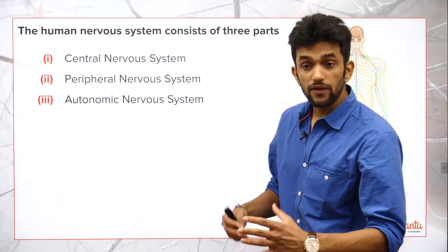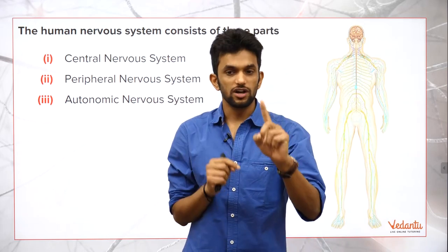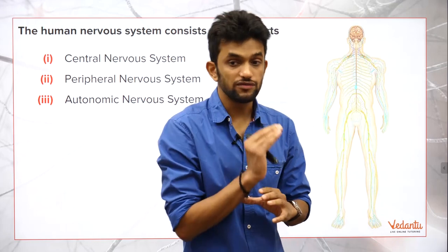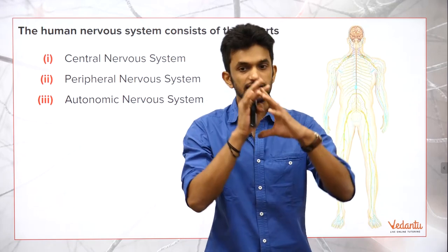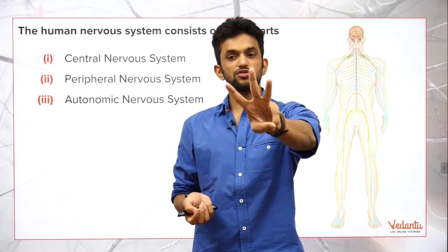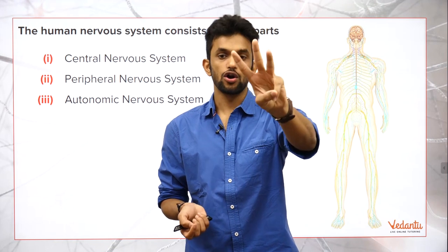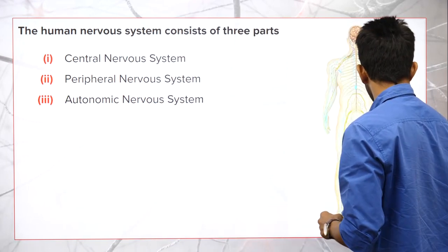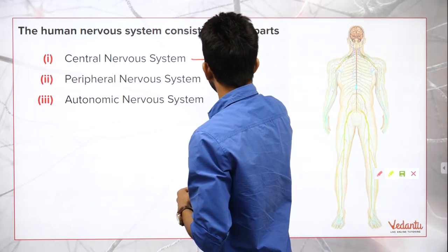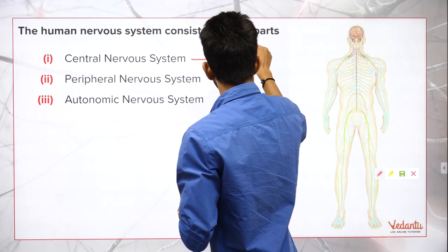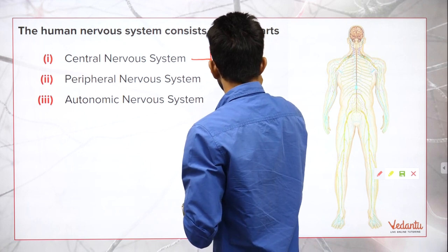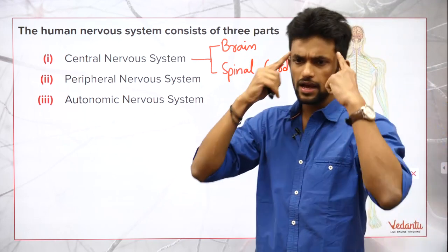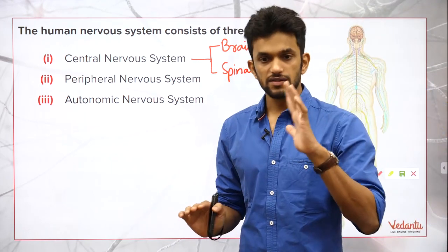Now we understand what the brain is made up of, what the structural and functional unit of the nervous system is, and how a neuron functions. The nervous system can be divided into three parts: the central nervous system, the peripheral nervous system, and the autonomous nervous system. The central nervous system consists of only the brain and spinal cord.